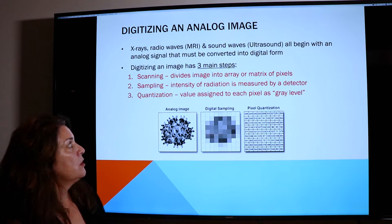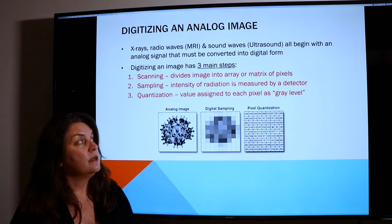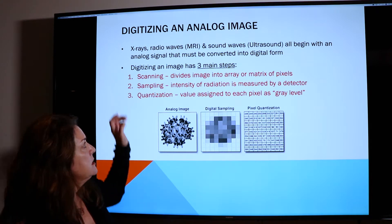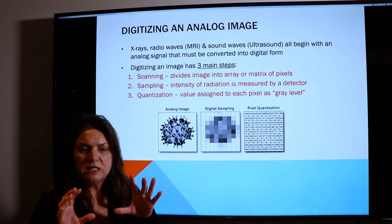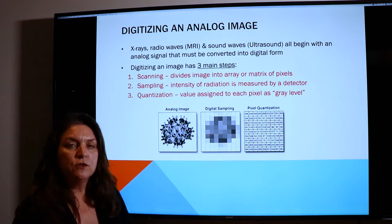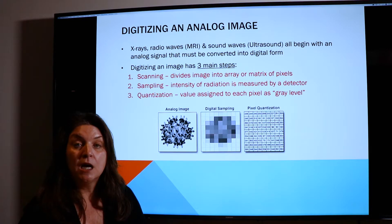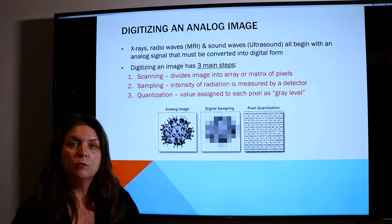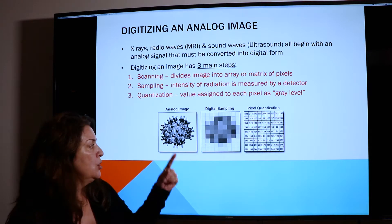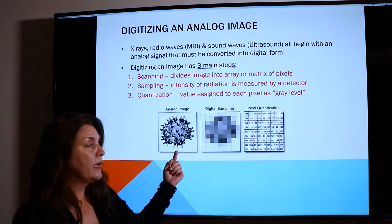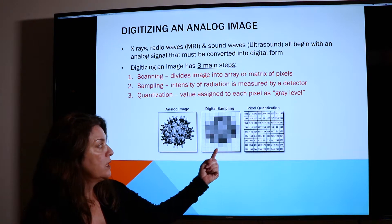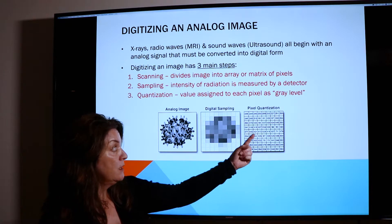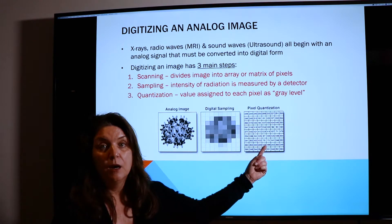The first step starts with scanning, and what scanning does is it divides the image up into the pixels. The second step is sampling, and that's actually taking a measurement of each of the pixels so that it can be assigned a number. And then in the quantization step, that's where the pixels are actually assigned a number. The analog image would be waves, sampling is measuring the pixels, and in quantization they've actually been assigned a number — a binary code.